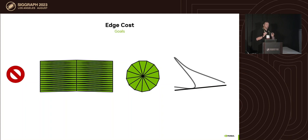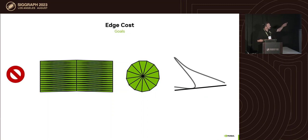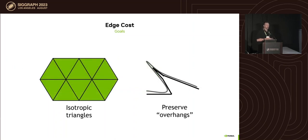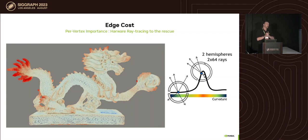Now the question is how do we compute the edge cost to decide which edges to collapse. Beyond edge length, we want to avoid pathological situations like elongated triangles. High valence for vertices is also something to avoid. We also want to preserve sharp features. Ultimately we want isotropic triangles, and we want to preserve overhang. To compute this we found an interesting trick using Nvidia hardware ray tracing.